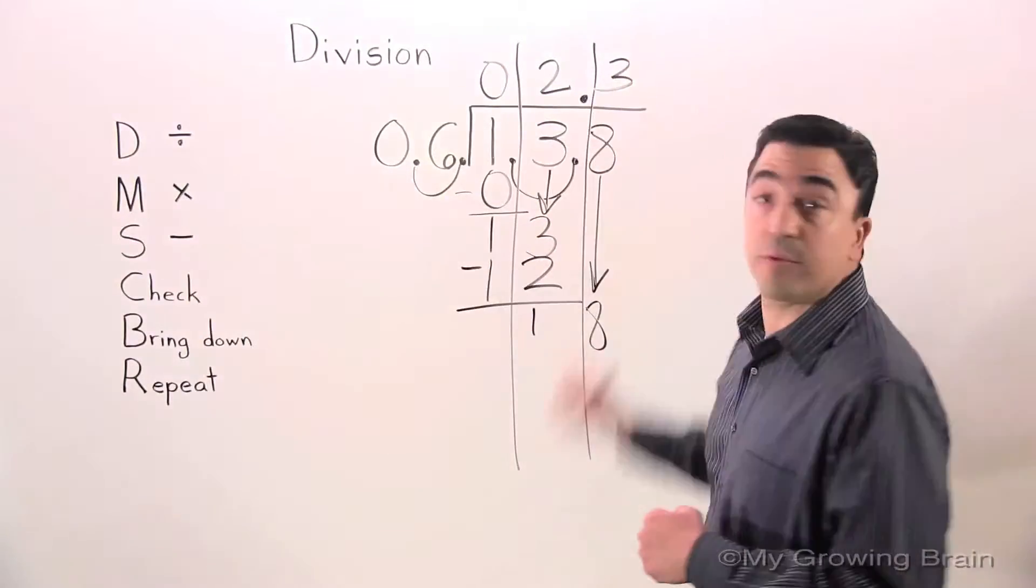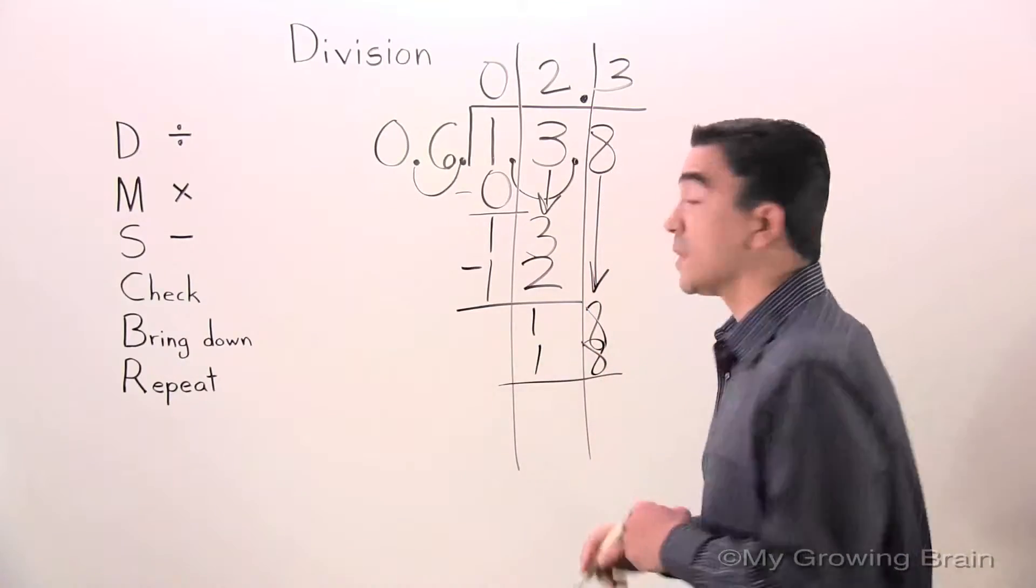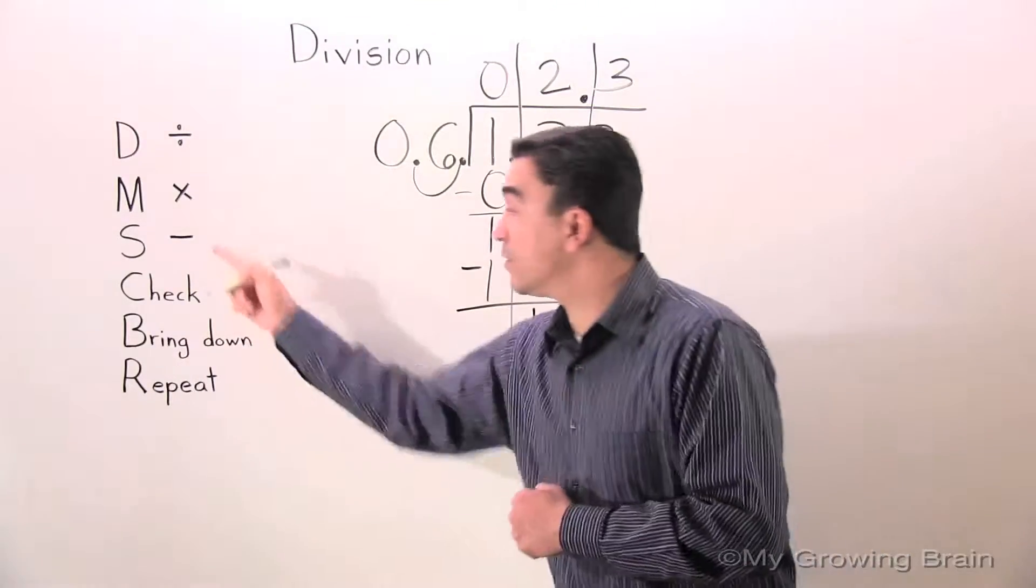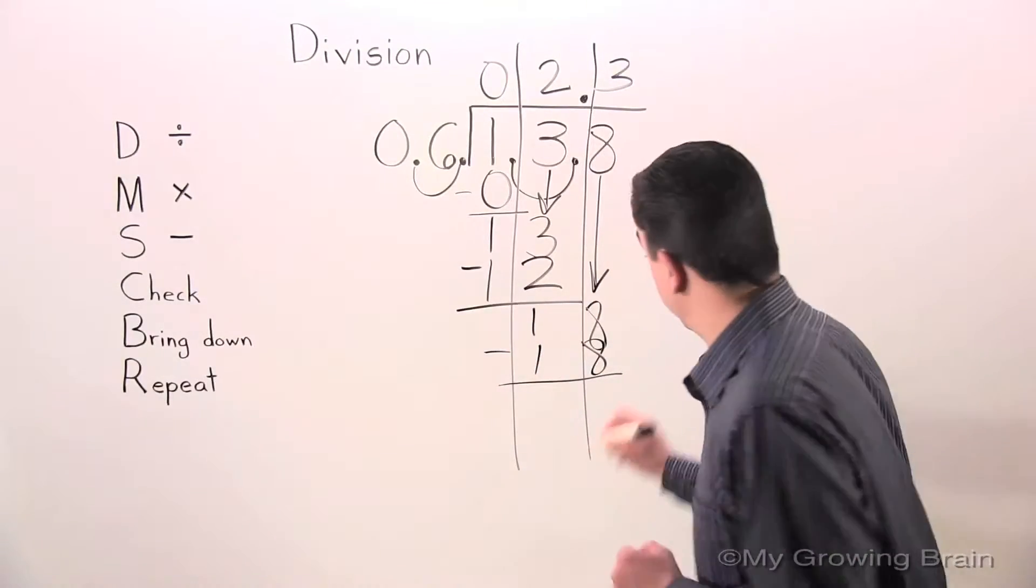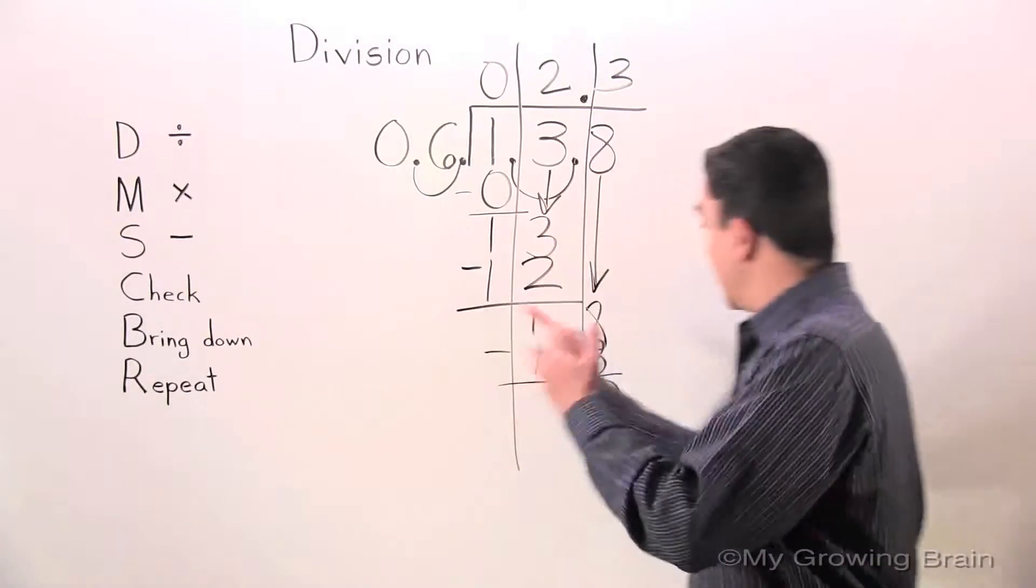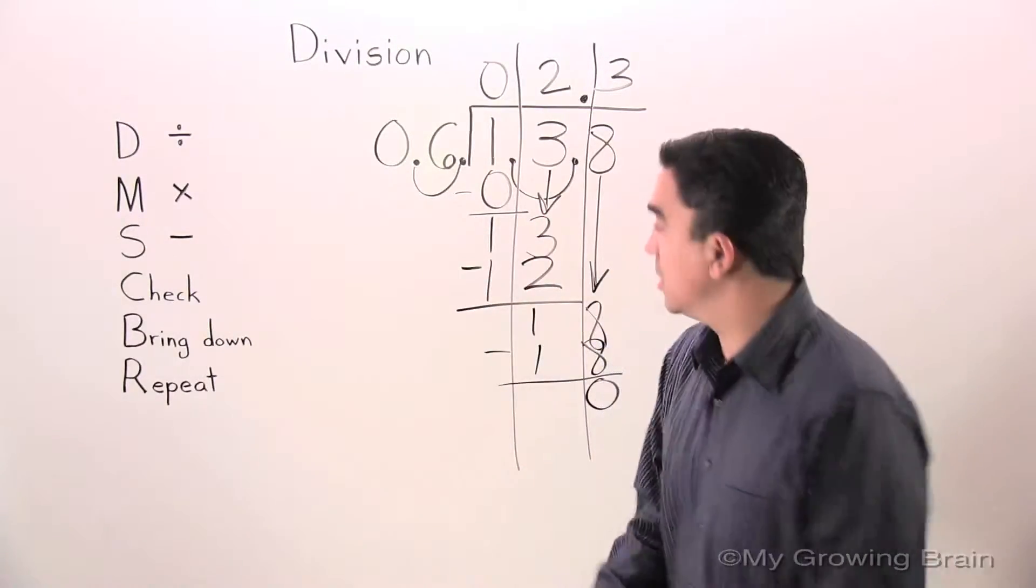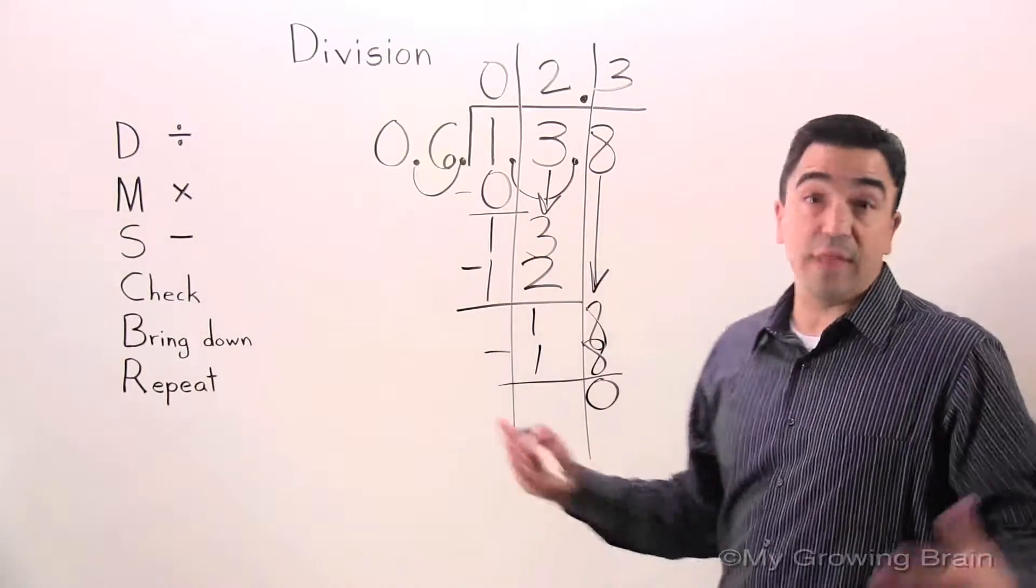Multiply: six times three is eighteen. Next step, subtract: eighteen minus eighteen, zero. Next step, check: zero is less than six, keep on going. Next step, bring down. Nothing there.